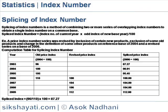The price index number series was revised by inclusion of certain new products, exclusion of old products, and change in the definition of some other products on the current basis of 2004, and a revised series on a base of 2006. The following table shows the computation of price index — old and new — for each year, with an overlapping year of 2006.